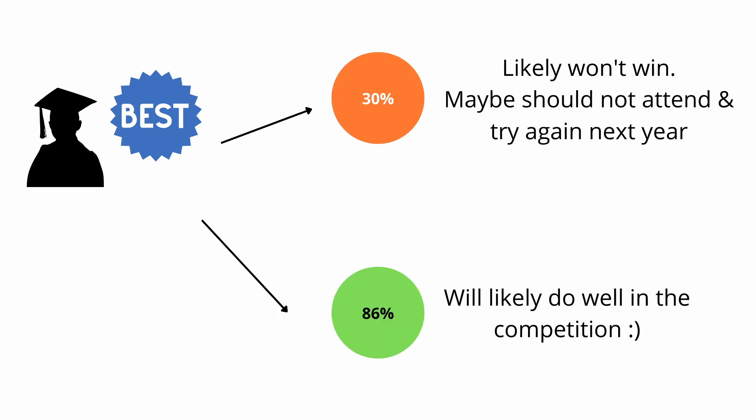So let's say our student or model only gets a 30% score on the test data that means they likely won't win and they won't do well and maybe you should just not attend and maybe prepare your students again and try again next year where you have a real chance of winning.